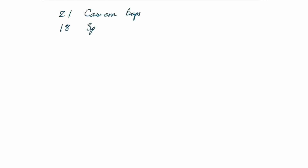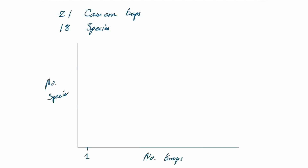Sometimes we don't have increasing effort as time goes on. In this example, we put 21 camera traps out and recorded 18 species of mammal, but we put all the camera traps out at the same time and took them all back in at the same time. We can still use that data to produce a species accumulation curve by sampling from our overall dataset. We can plot number of species on the y-axis and number of traps on the x-axis, and ask: how many species would we have seen if we only had one camera trap? The maximum number of species on a single camera trap was five, but some traps recorded four, three, two, one, or zero species.